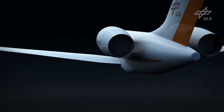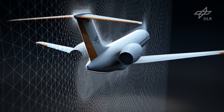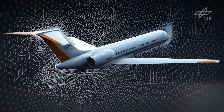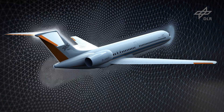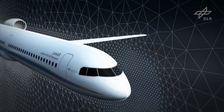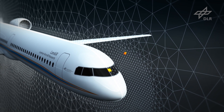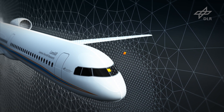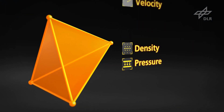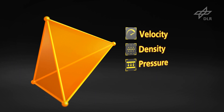So, instead of considering each separate particle, scientists divide up the space around an airplane into a grid made up of individual cells. The crucial point is that the cells have different sizes – the more precise the data needs to be, the smaller the particular cell. The state of the cells is described by physical quantities like pressure, density, and the velocity in the three spatial directions.